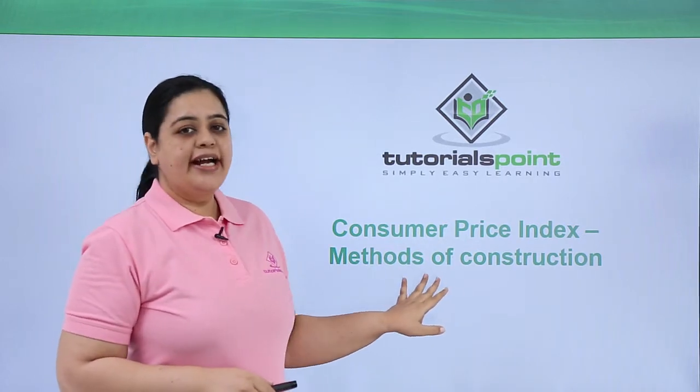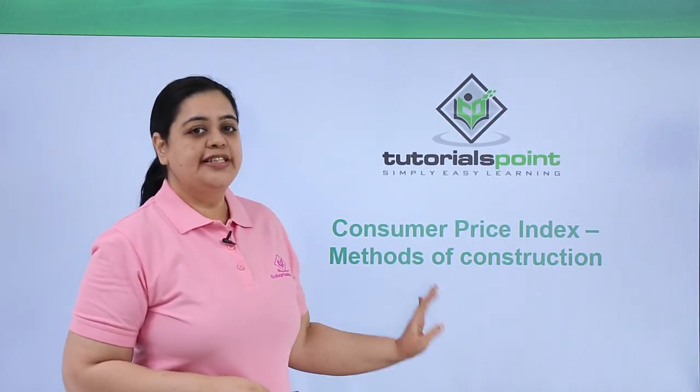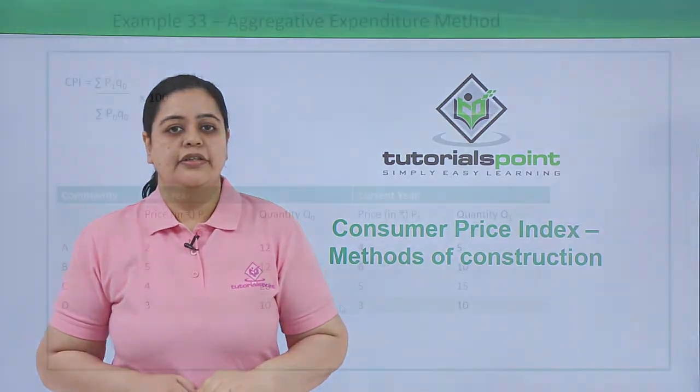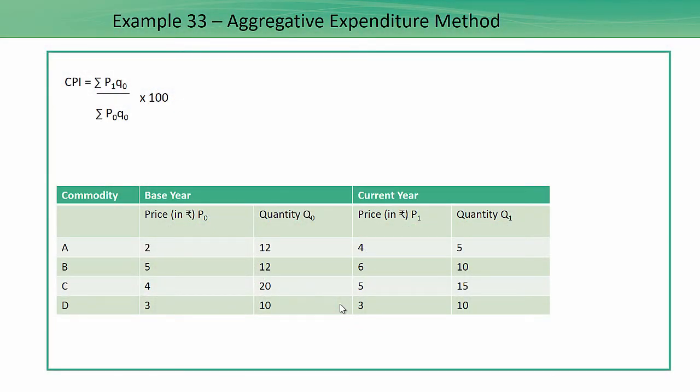Now let us quickly understand what are the ways to construct a CPI. When it comes to consumer price index, the first method we have is aggregative expenditure method.